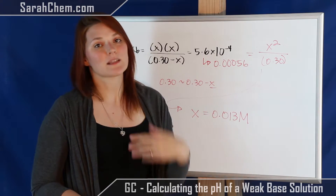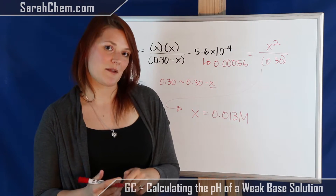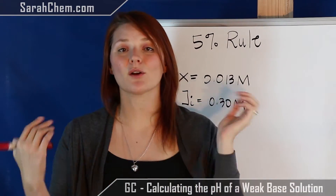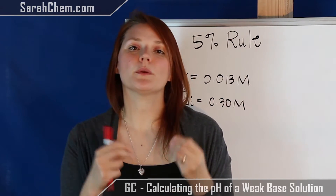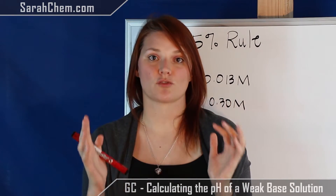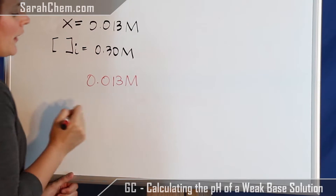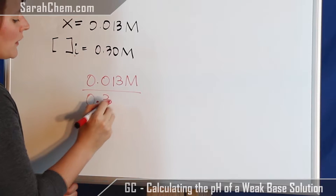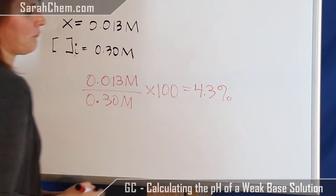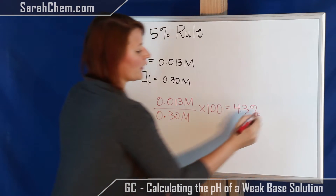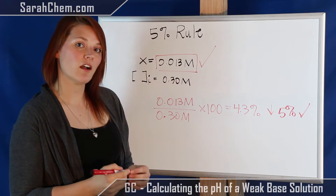When you make this small x assumption, sometimes it's valid and sometimes it's not, so you need to validate it using the 5% rule. The 5% rule checks whether x is less than 5% of the initial concentration. We take x, which is 0.013 molar, divide by the initial concentration of 0.30 molar, and multiply by 100. We get a value of 4.3%. This is close to 5% but still less than it, so the assumption is valid and we can use that concentration for our final calculation.